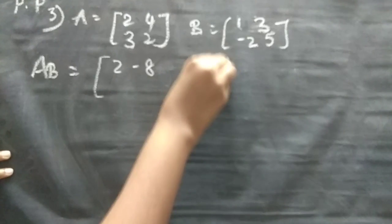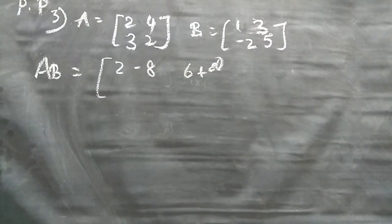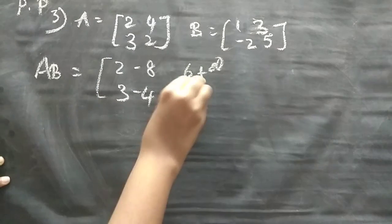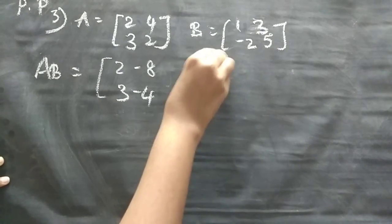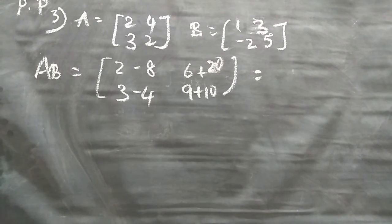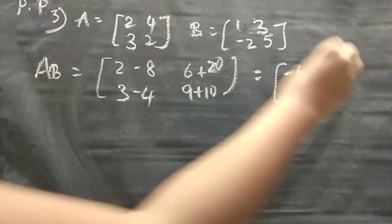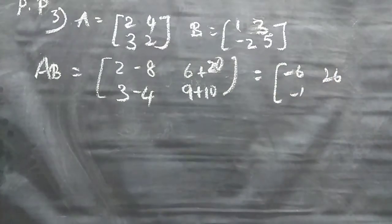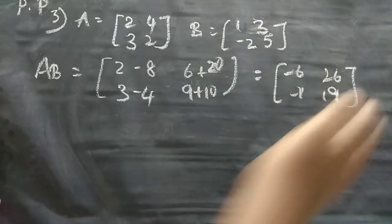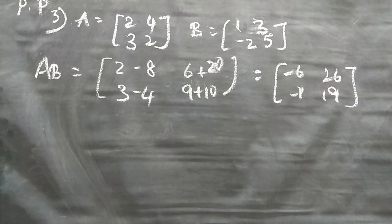So 2 minus 8, 6 plus 20. 3 minus 4, 9 plus 10. So that would be, answer is -6, 26, -1, and 19. Option number B, option number, so this is the matrix. Option number is A.